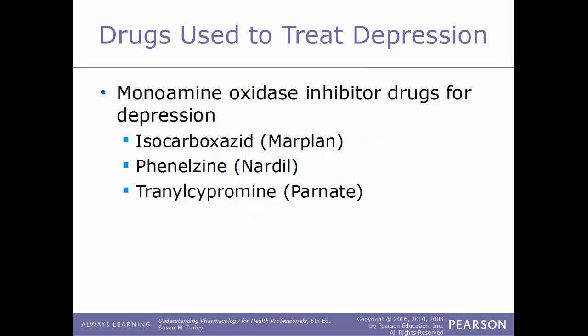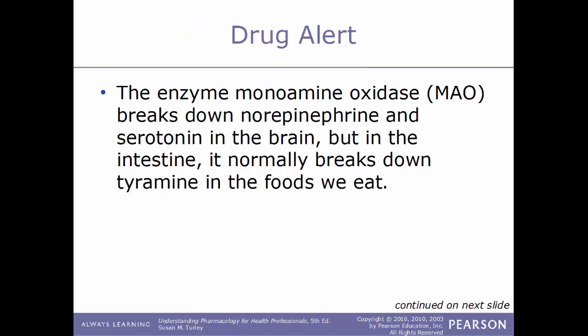Examples of MAO inhibitors include isocarboxazid (Marplan), phenelzine (Nardil), and tranylcypromine (Parnate).